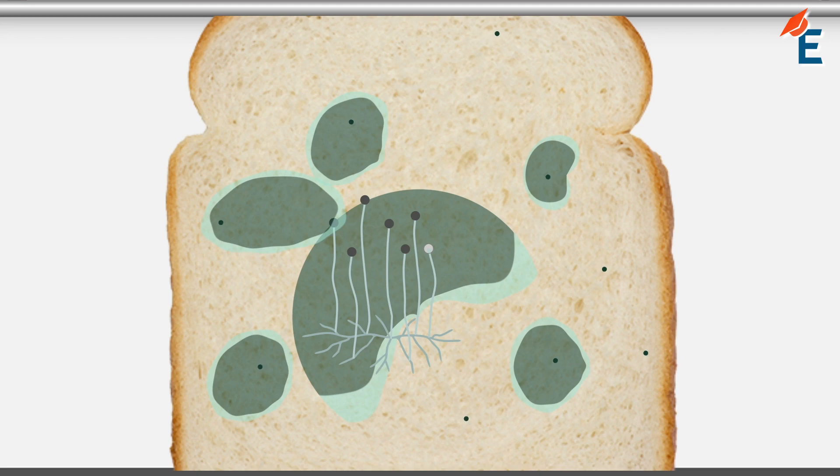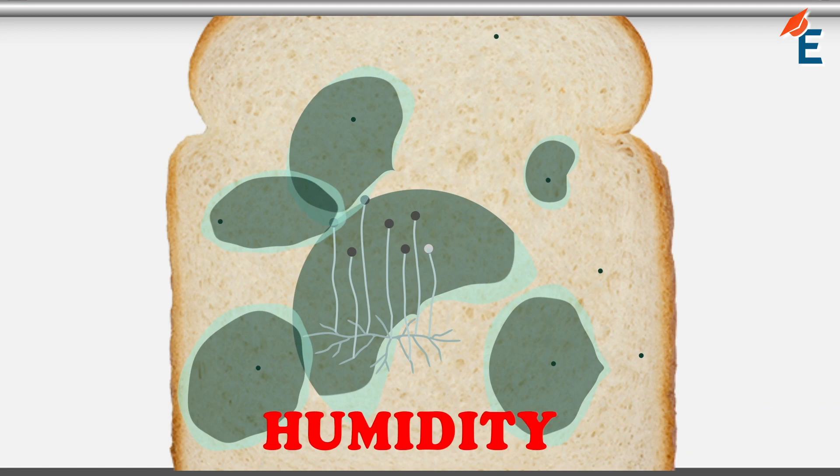The bread mold in the bread is happening or we can say is growing due to this. What happens is these spores keep moving and circulating in the air. When they get humidity and nutrition from the bread, they start growing, and that is how the fungus or we can say the bread mold develops in the bread.